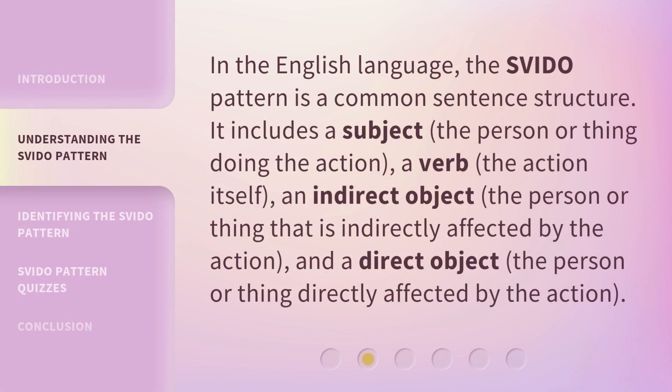In the English language, the SVIDO pattern is a common sentence structure. It includes a subject — the person or thing doing the action — a verb, the action itself, an indirect object, the person or thing that is indirectly affected by the action, and a direct object, the person or thing directly affected by the action.